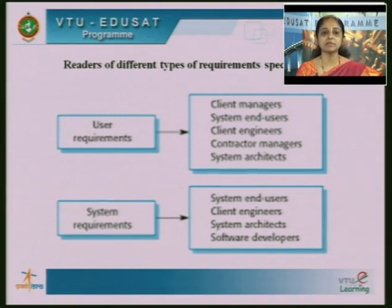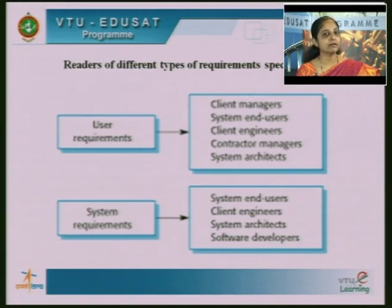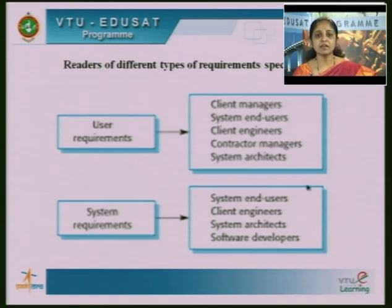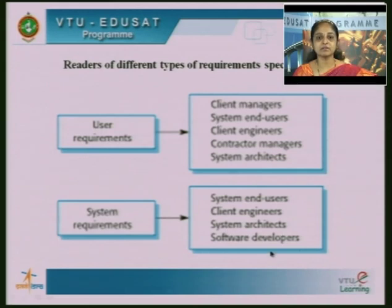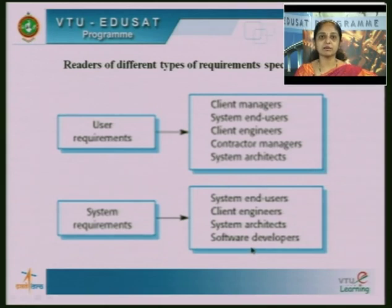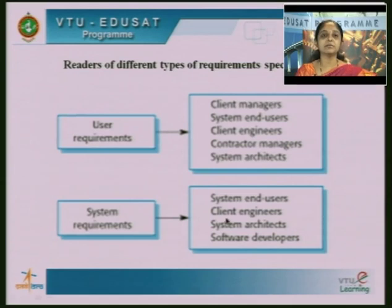As part of the requirements specification document, both user and system requirements must be present. User requirements are read by end users, clients, contract managers, and system architects. System requirements provide input to software developers, who focus on system requirements more than user requirements. The design engineer considers what the user wants and how the system can be architected, reading both types.